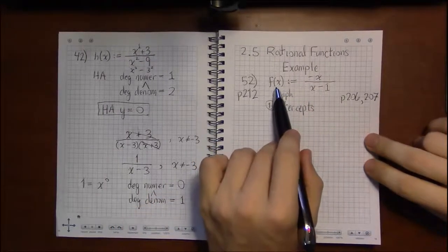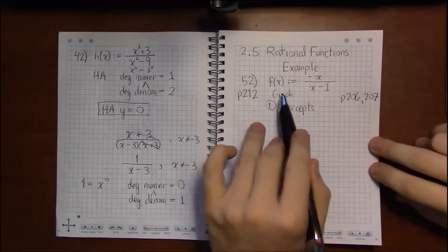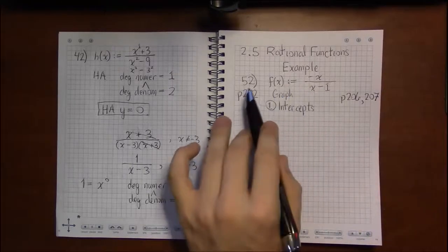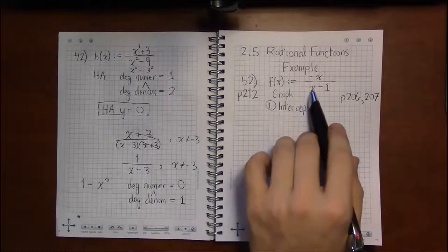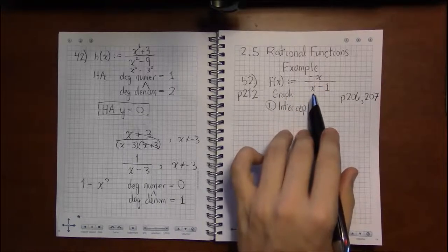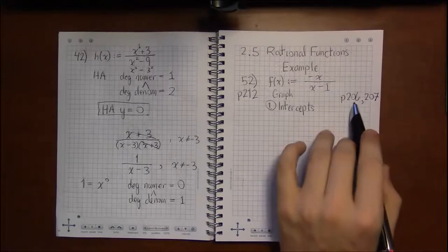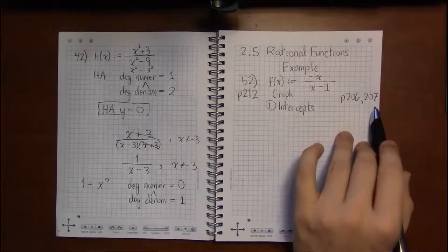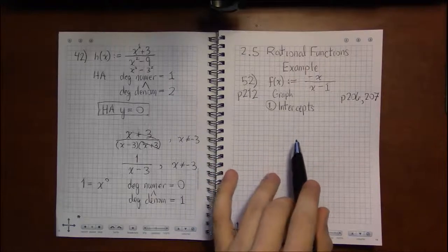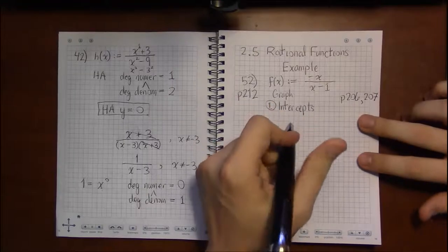Now let's take a look at the long and tedious problems of this section, the problems where we're asked to graph a particular rational function. Like in problem 52, we're asked to graph the function -x over x-1. The procedure they tell us to use is located on pages 206 and 207. It's just kind of a step-by-step what to do first, what to do next. The first thing we're told to do is to find the intercepts.